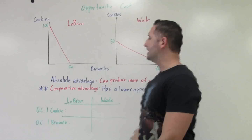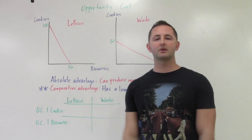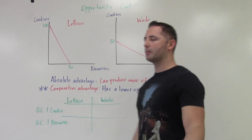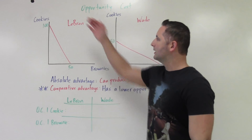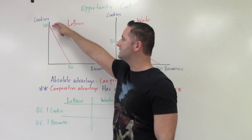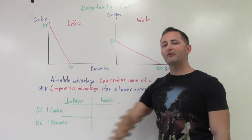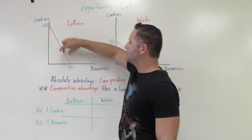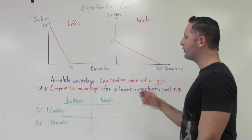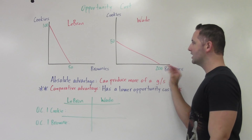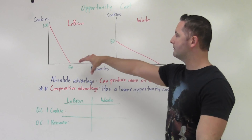We have LeBron and Wade. LeBron and Wade have the opportunity to either make cookies or to make brownies — those are the only things they're going to do. Our PPCs show us the total amount of cookies or brownies they can make. LeBron can use all his efforts on cookies and make 100 cookies but zero brownies, or he can make 50 brownies and no cookies, or any combination along that curve. Wade can make 50 cookies with all his effort, or 200 brownies, or some combination.